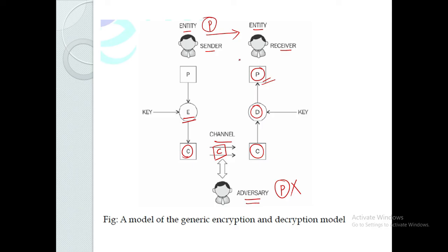In this scenario, when we use cryptography, even if the adversary is able to listen to the channel, what they receive is C — the ciphertext, which is a secret code. The adversary cannot convert it back to the plaintext.